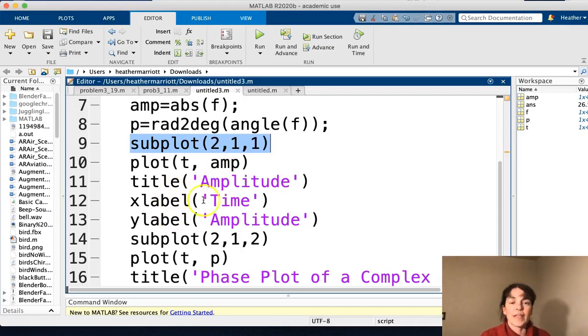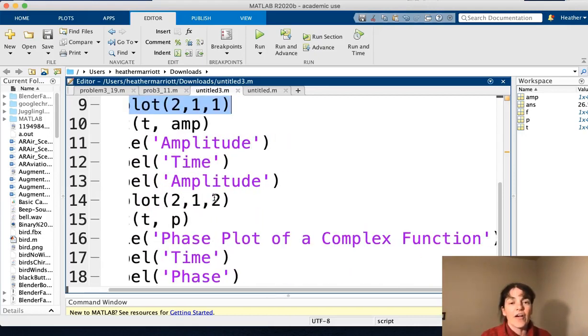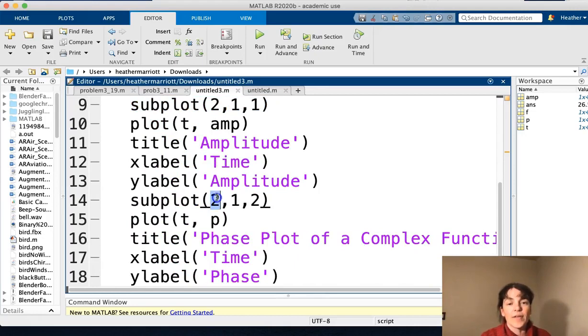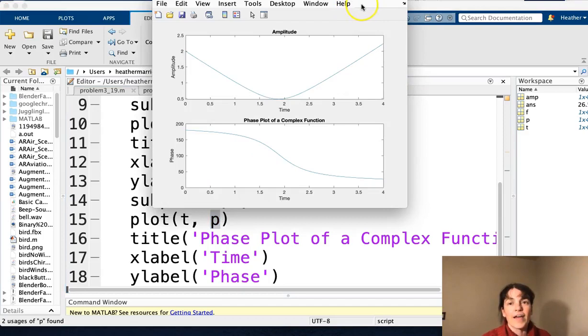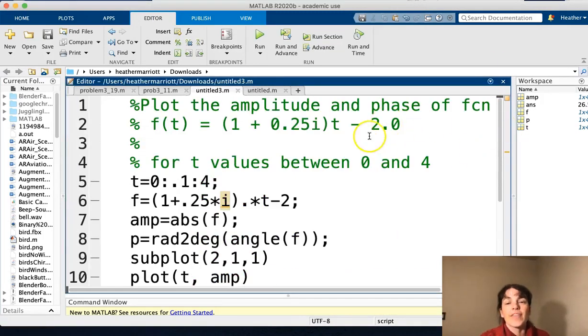And I'm going to label the x and the y-axis on the second subplot. So I'm saying I want this to have two different rows, one different column, but this will be our second plot. So this I'm going to plot the time versus the phase. And if we run this, voila, we have one figure that has two graphs on it. And that answers our original question, which was go ahead and plot the amplitude and the phase of this function.